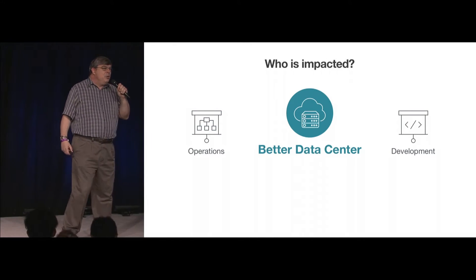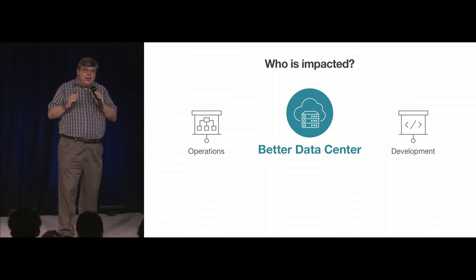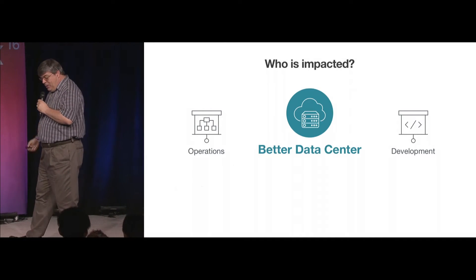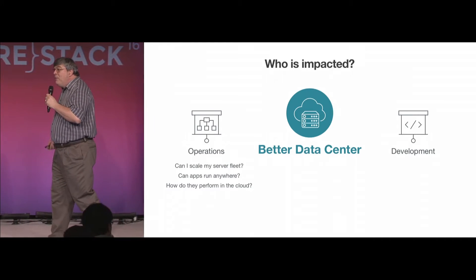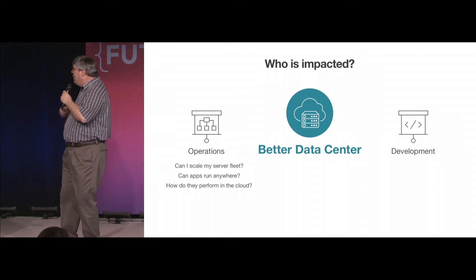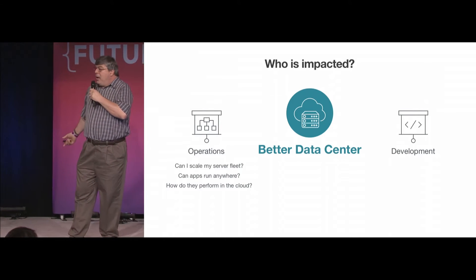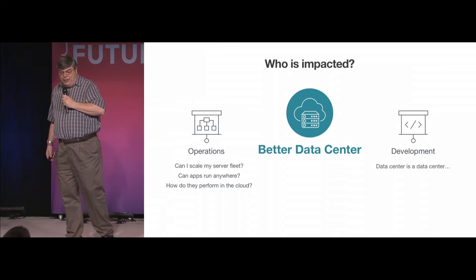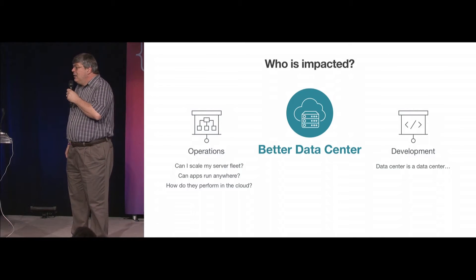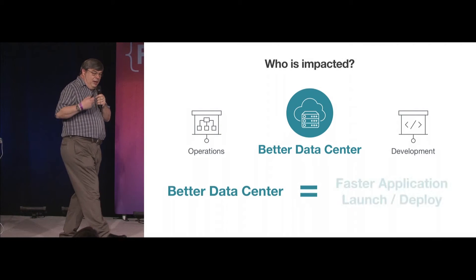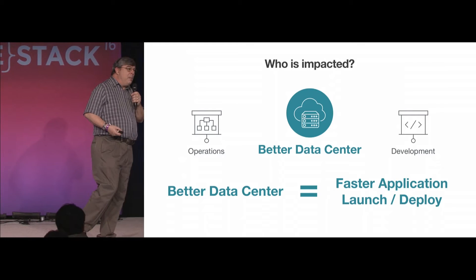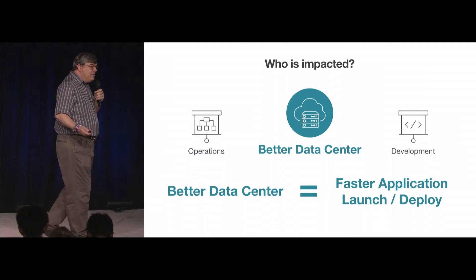Who's impacted by this? When you look at the two groups within your organization — the operations team and the development teams — who cares about using the cloud as a data center? Well, your operations team obviously does. Whenever they think about using a new data center, they have questions about how it helps them scale the application and how well apps will perform. But your development team doesn't care less. To them, a data center is a data center — the fact that it's cloud-based is completely irrelevant. Using the cloud as a static data center is typically used to bring up new applications faster.